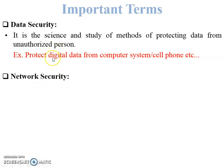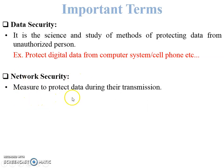The second term is network security. Whenever a sender wants to send data to a receiver, security is essential. Data may be secured but the network may not be secured, so data can be stolen from the network. Network security refers to measures to protect data during transmission — whenever data is transmitted from sender to receiver, we secure the network channel.